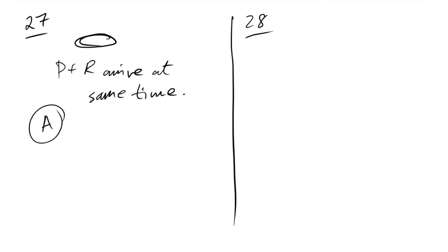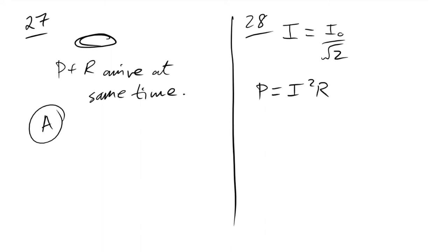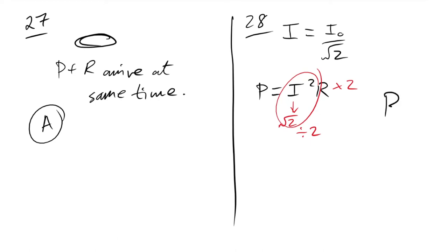Question 28: a DC resistor R carries current I. A second resistor 2R carries AC with peak current I. The RMS current in the second resistor is I/√2. Power = I²R, so power in second = (I/√2)² × 2R = (I²/2) × 2R = I²R. This is the same as the first resistor. The answer is B.